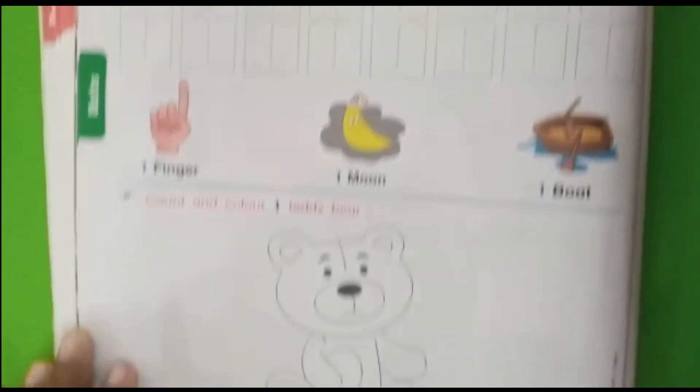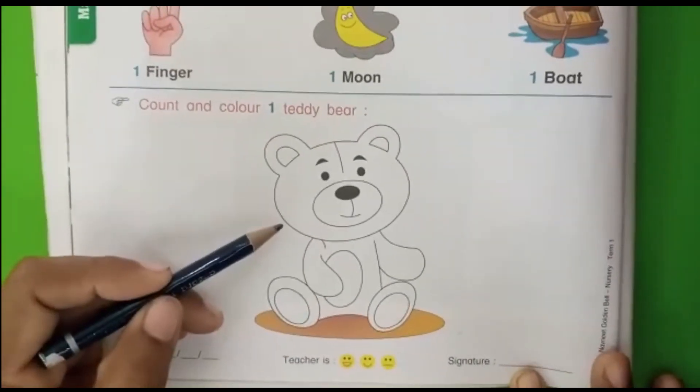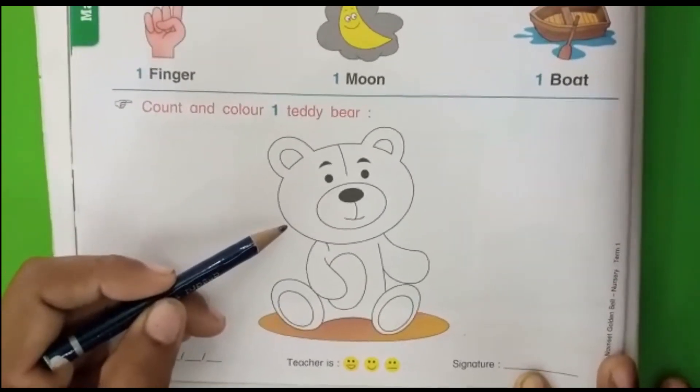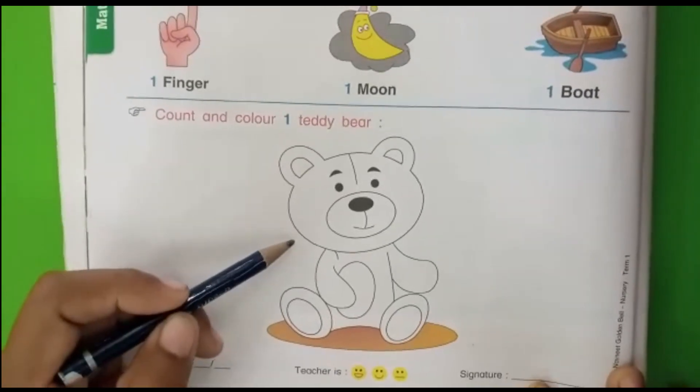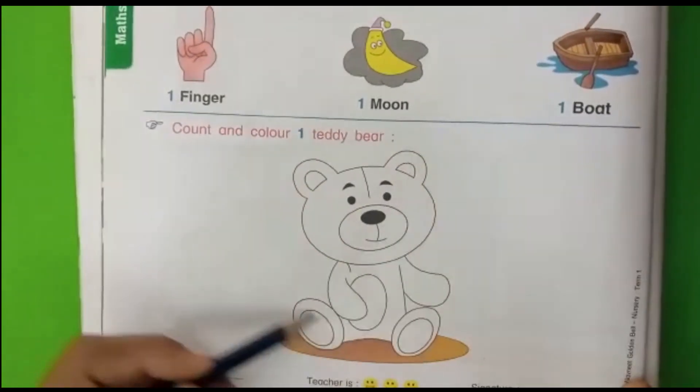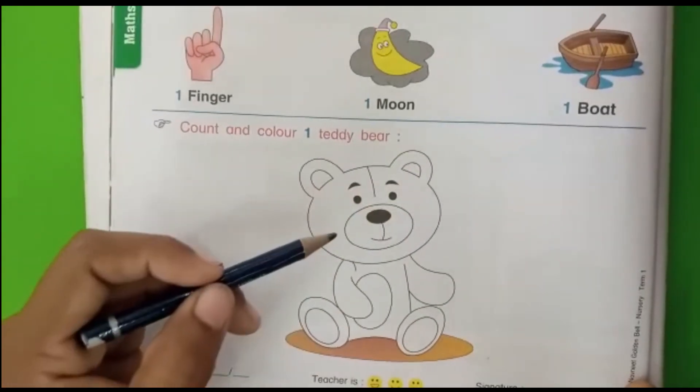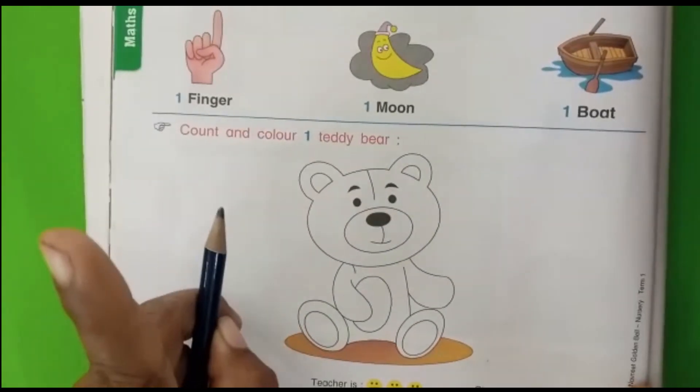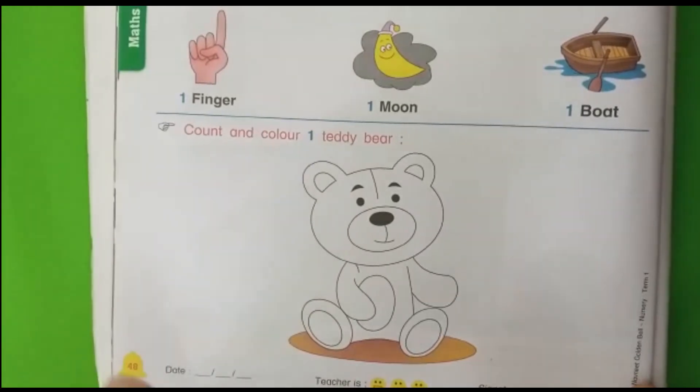Now see here. In this picture, which is this picture? This is a teddy bear. So all of you color this teddy bear. How many teddy bear? Only 1.